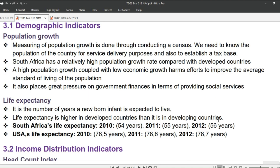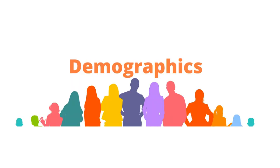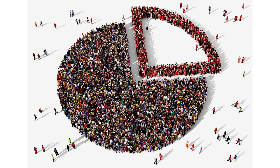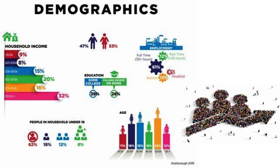We will kick-start with demographic indicators, from which we will discuss population growth and life expectancy. Demographics refers to the statistical data that describes the characteristics of a population, such as age, gender, race, income, education level, and more. Examples include household income, gender, employment, education, and so on.